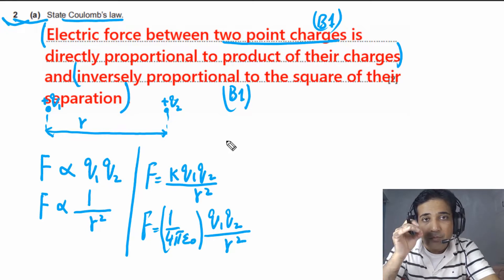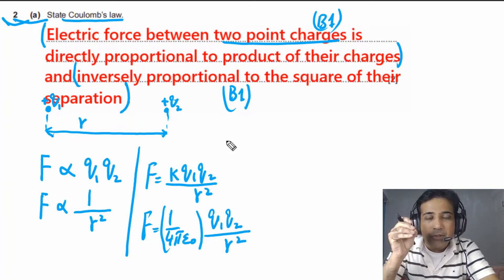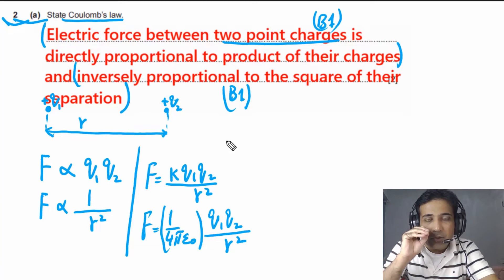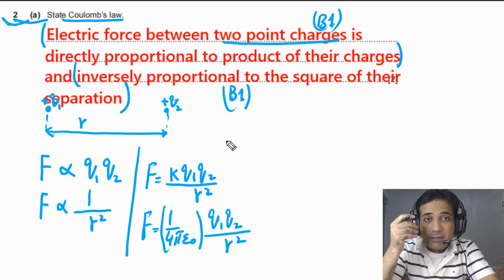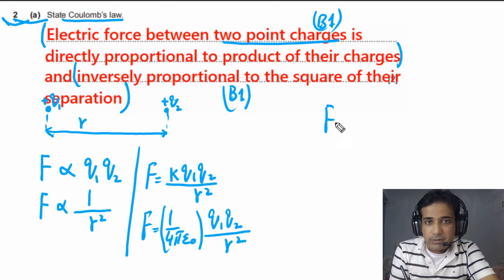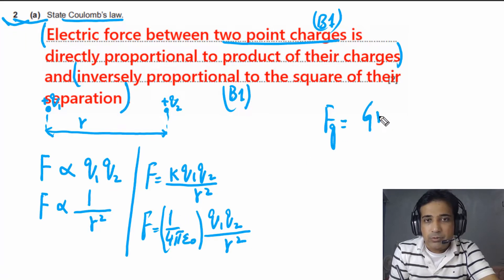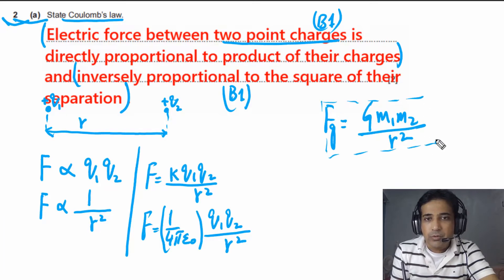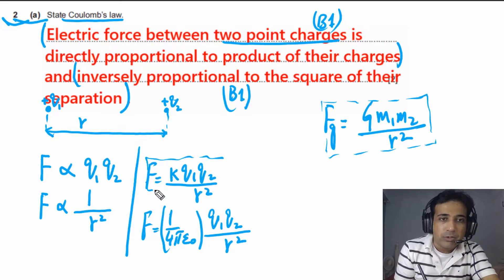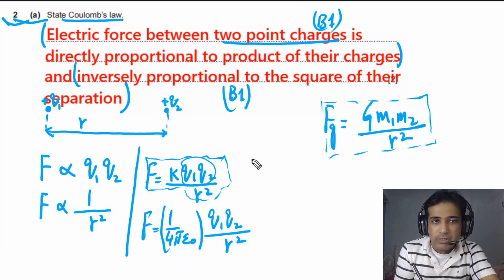Coulomb's law is very similar to Newton's law of gravitation. In Newton's law of gravitation, we talk about point masses; in Coulomb's law, we talk about point charges — everything else is the same. In Newton's law of gravitation, for gravitational force, we have the universal gravitational constant G; here we have Coulomb's constant k. The gravitational force is F = GM1M2 / R², and Coulomb's law is F = kQ1Q2 / R². The only differences are the constants and whether we use point charges or point masses.